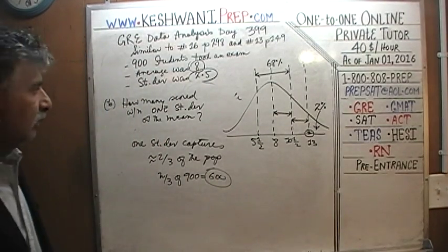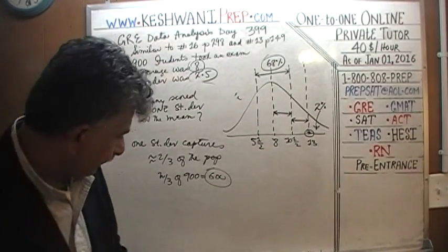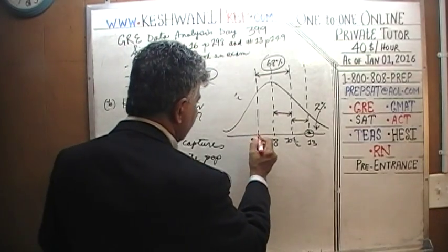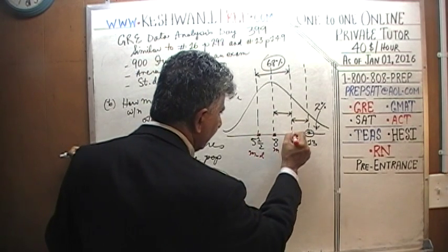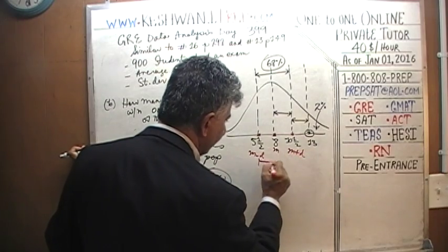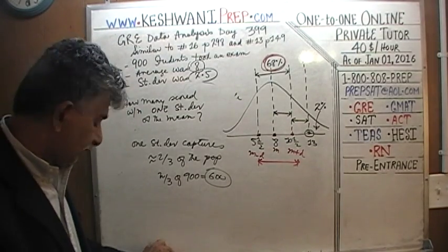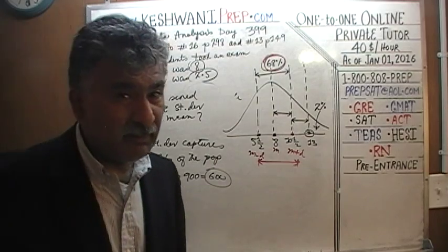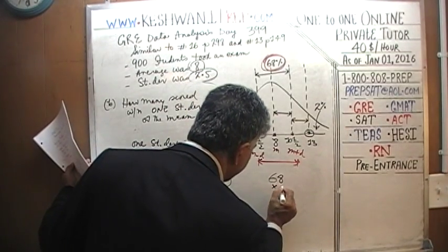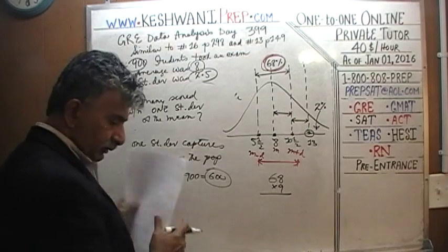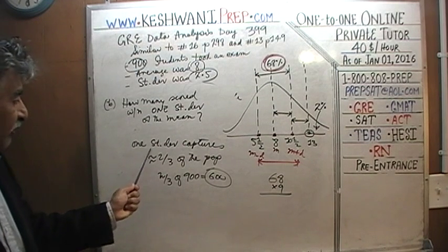Two-thirds of 900 is 600. Another way to look at it: one standard deviation spans from the mean minus the standard deviation to the mean plus the standard deviation — that is, from 5.5 to 10.5. This range captures 68% of the population. If you want to be more precise, you can calculate 68 times 9.